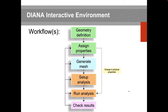In terms of workflow, Diana is very straightforward. You start with geometry definition, then assign properties — boundary conditions, loads, and materials — all at the geometry level. Once geometry and properties are defined, you move to meshing by assigning mesh seedings. Then you set up the analysis, telling Diana what type of analysis to perform and what output to generate.